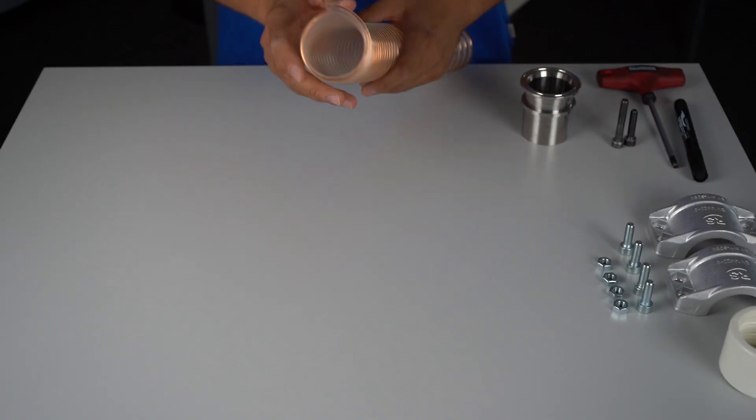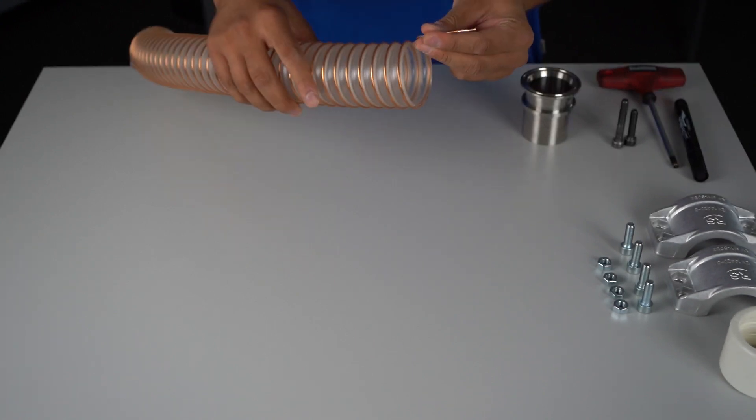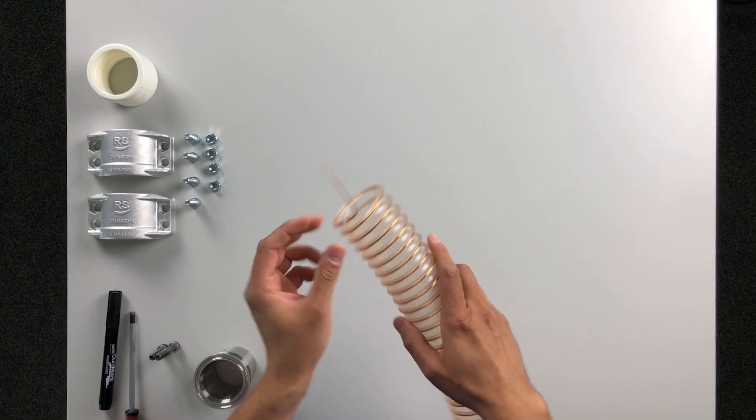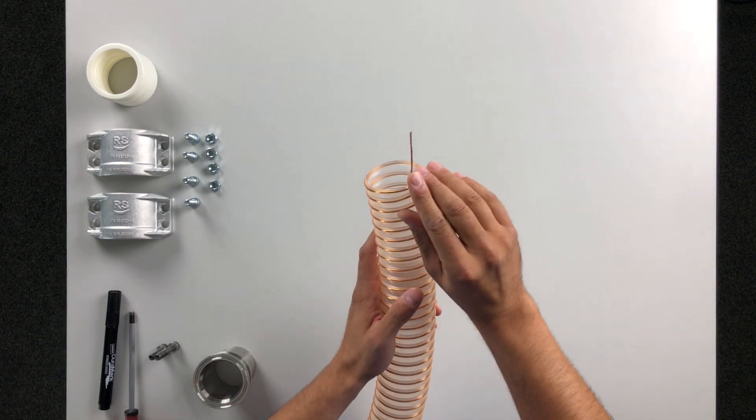But first we have to expose the wire from the wall of the hose. You can see how this works in our episode 1.